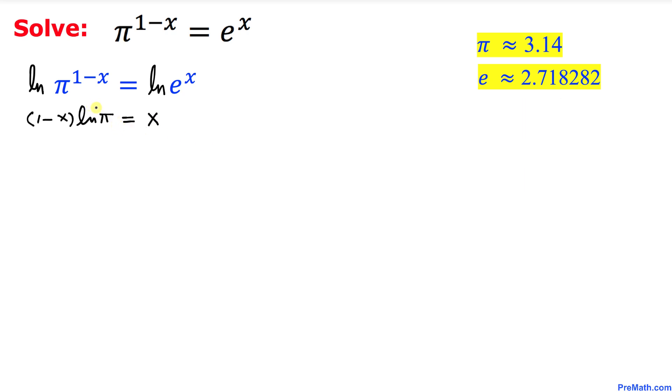And now let's go ahead and distribute this one. So we are going to get ln(π) - x·ln(π) = x. Now we are going to move this term on the right hand side. So we got ln(π) = x + x·ln(π).